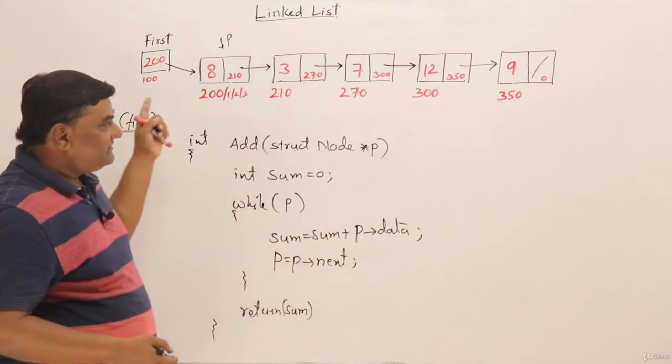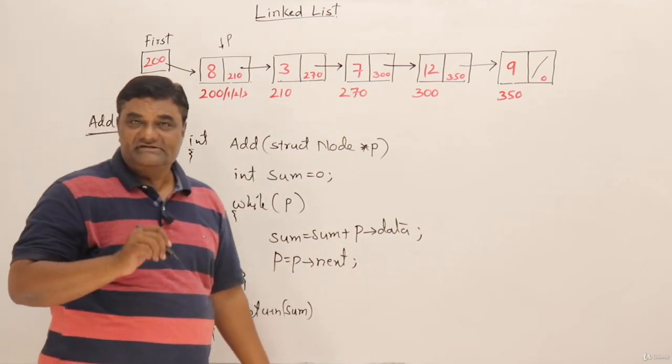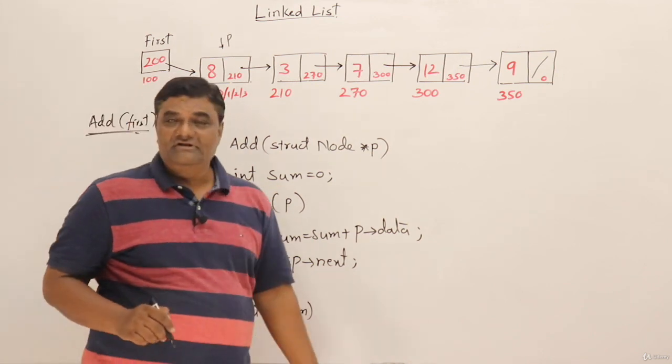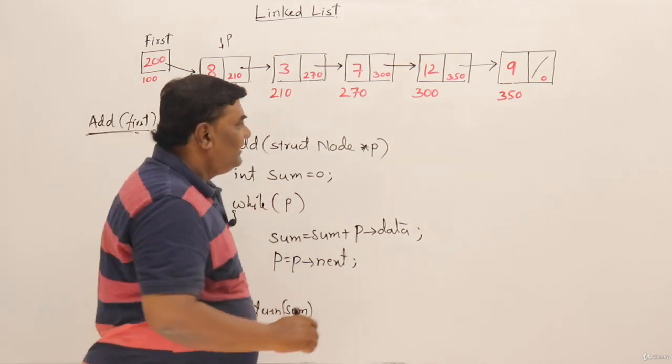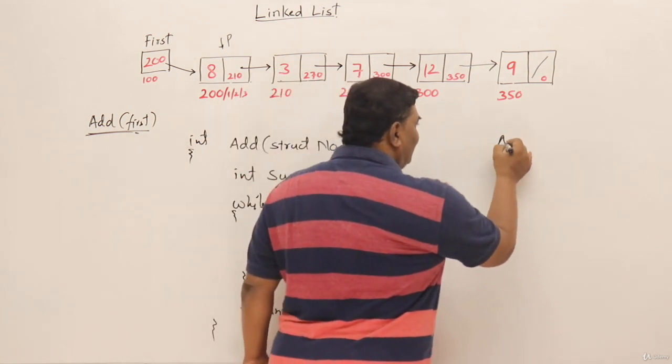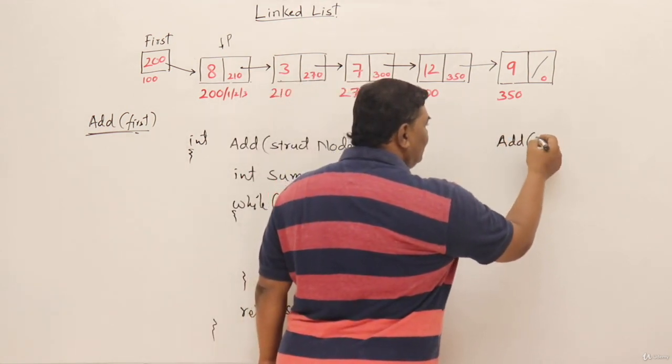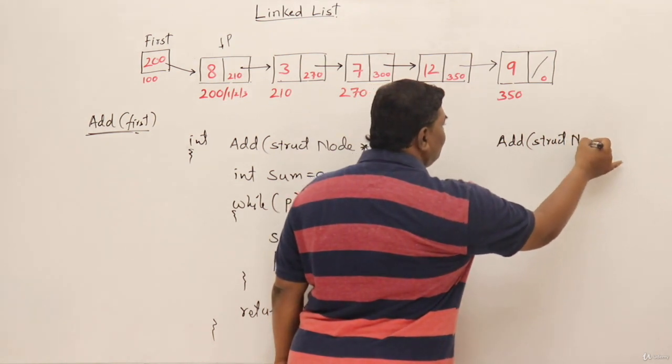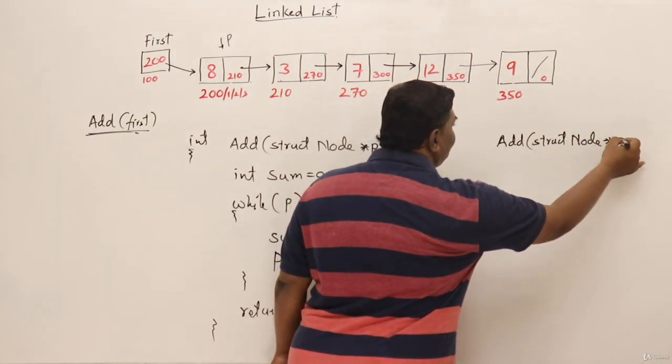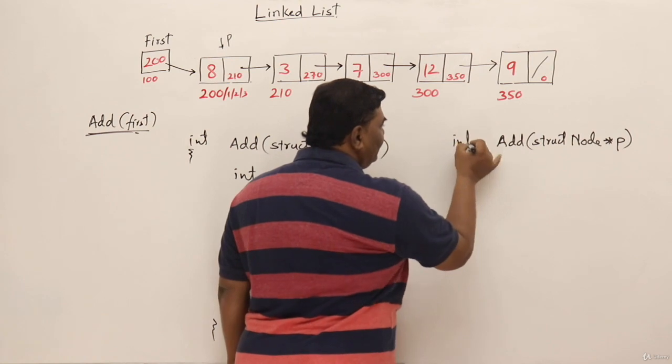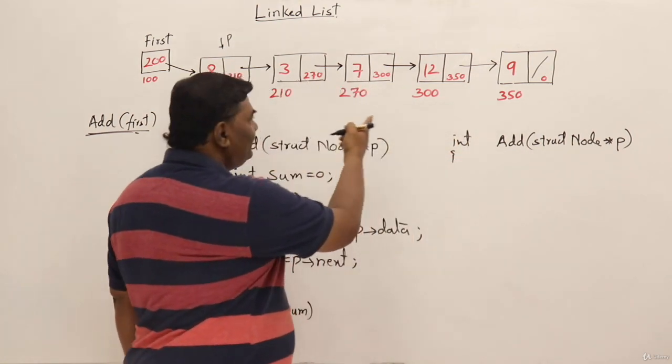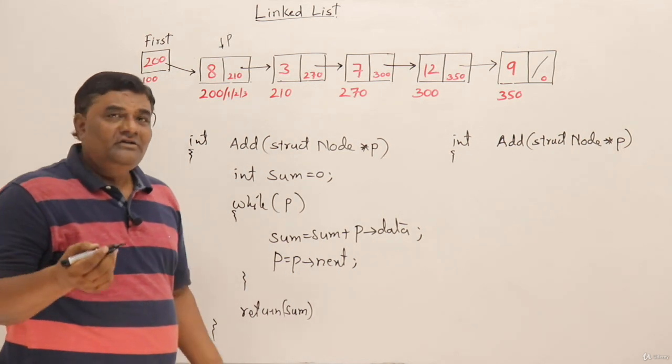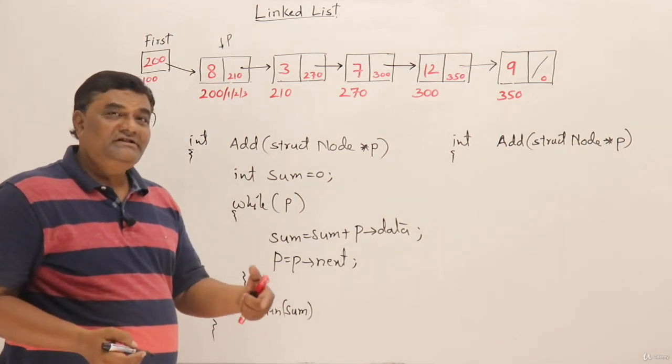Now let me write the same function for finding the sum of all the elements using recursion. I will call the function name as add - same function I am taking - and it's taking a parameter struct node pointer P. Then it should return integer result because all these elements are integer in our example. In the recursive method, we have already seen in counting in the previous video - similar approach we have to take.